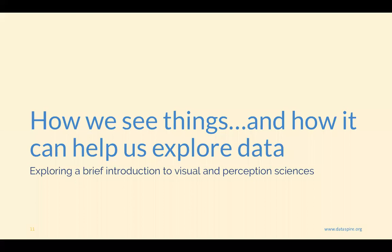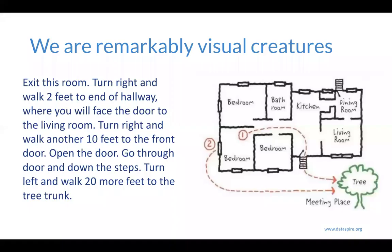There are some things we can take forward almost regardless of which field we're in, what purpose we have, or how we're defining 'good.' Part of it has to do with how we as human beings see things and how that can help us explore data. We're going to do a brief introduction to some components of visual and perception science — how we visualize, perceive, and make meaning from things, and how that influences what we do with our data.